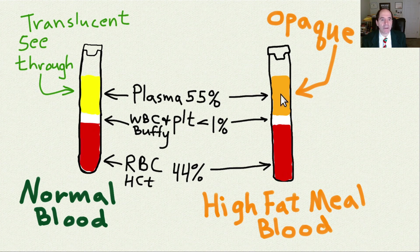If a person is eating a high-fat meal, the plasma will be full of fat, like the chylomicrons, and it will be rather opaque.